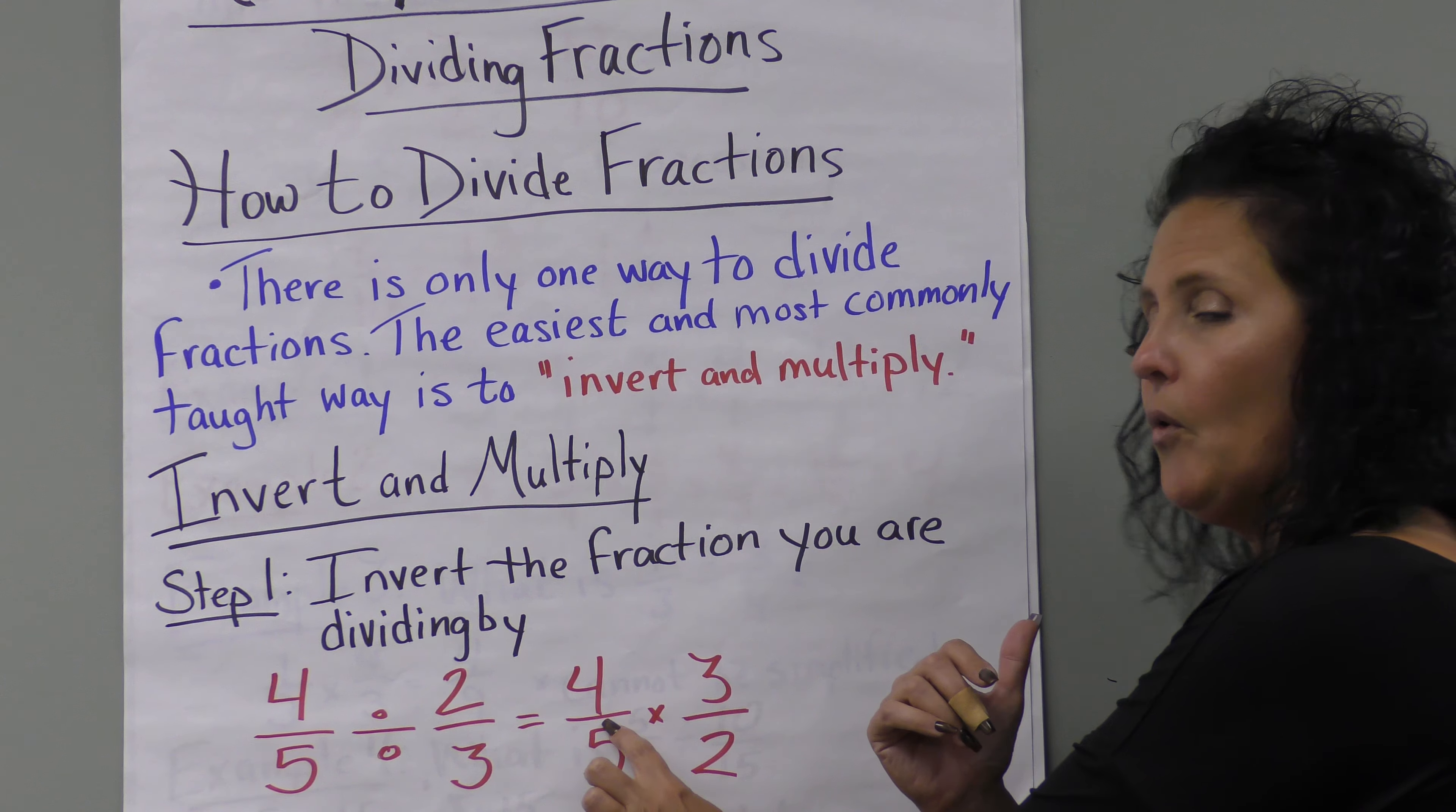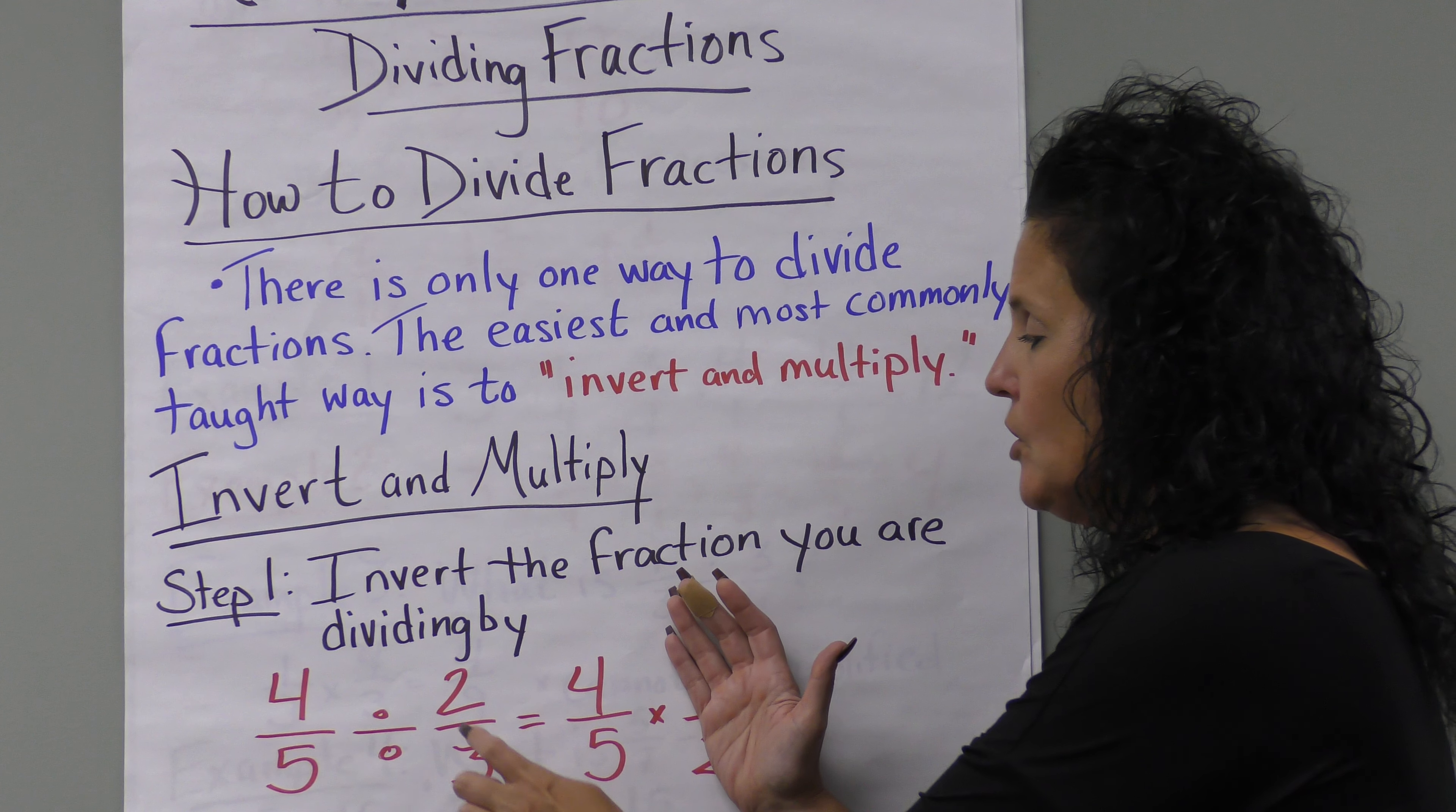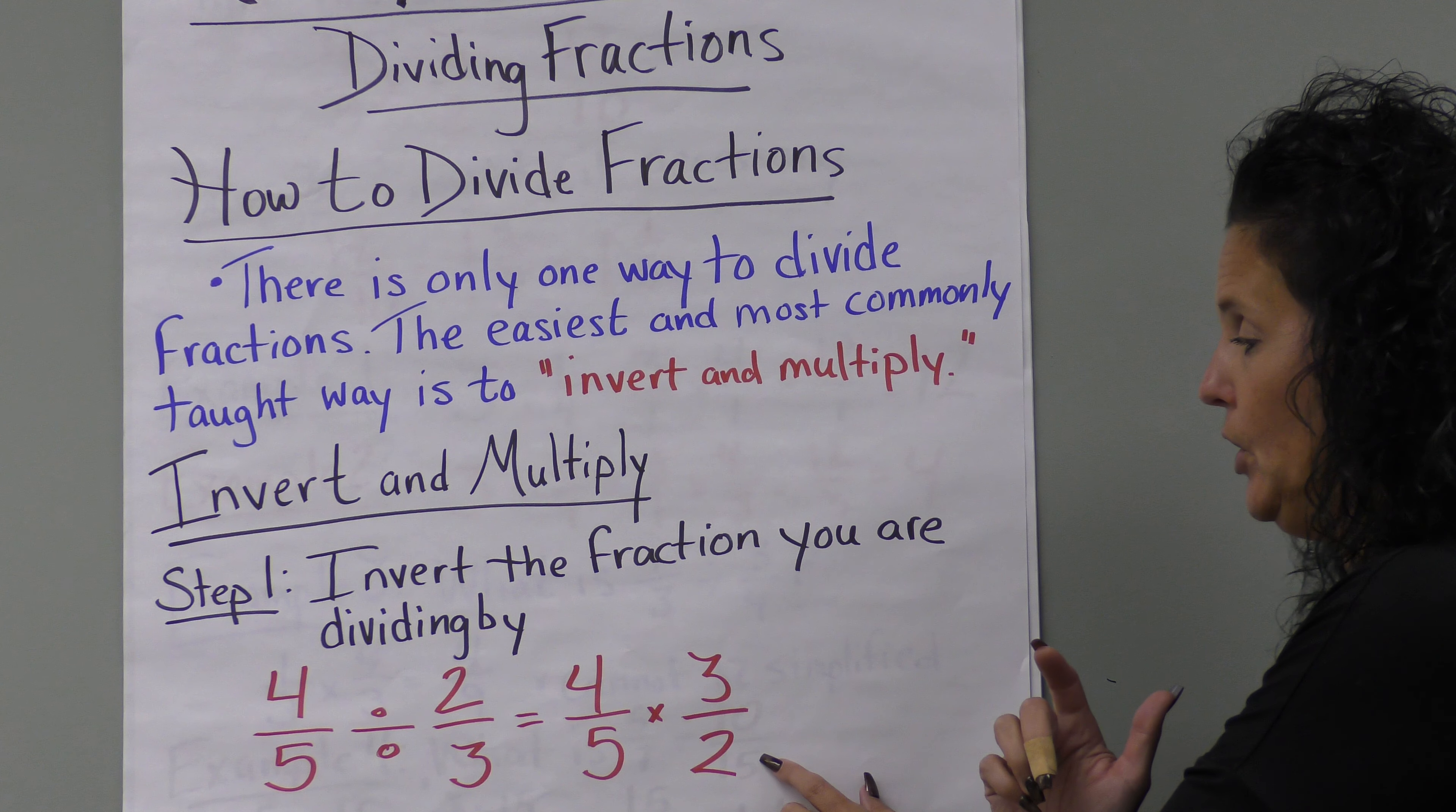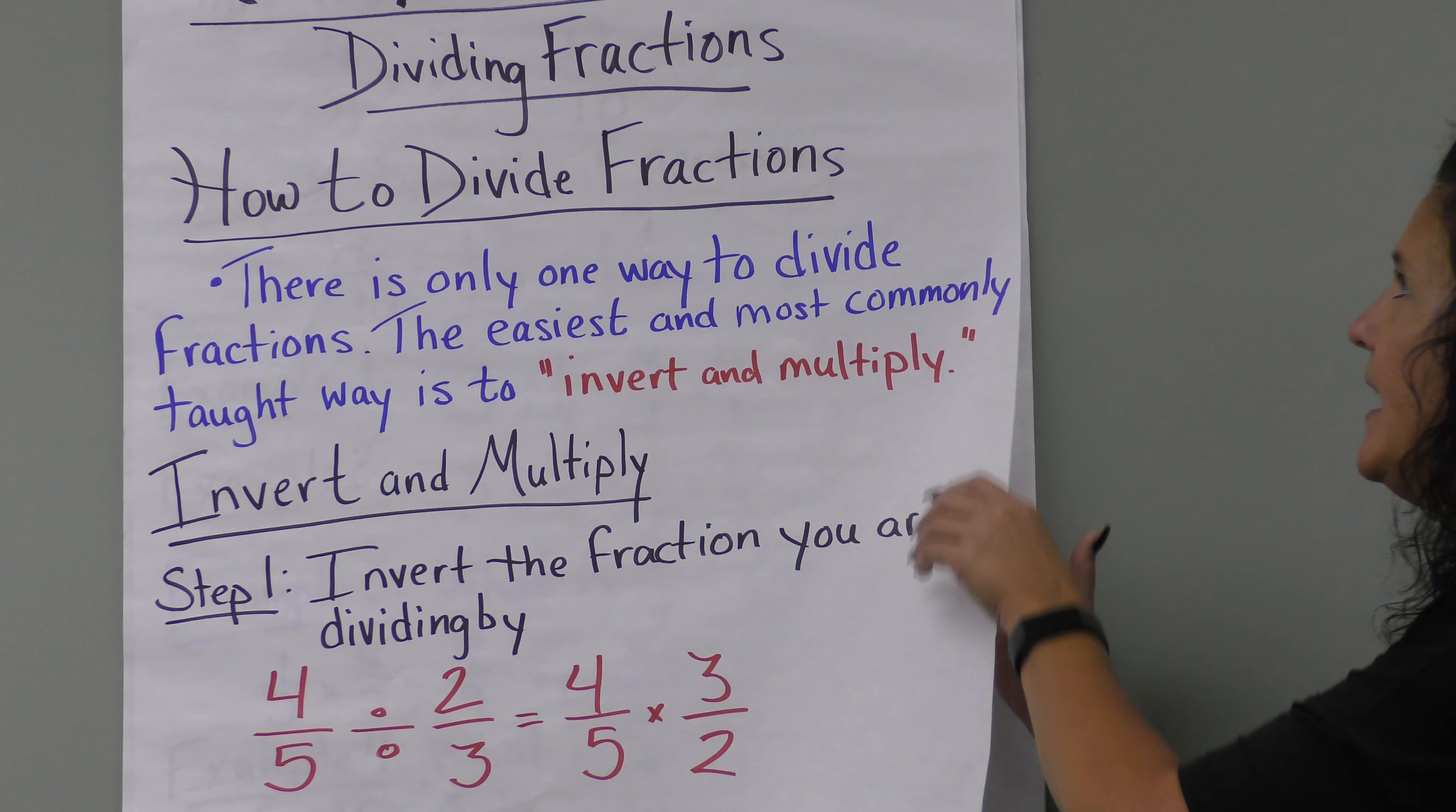So we keep four-fifths, but when we say invert, we mean flip it over. Instead of two-thirds, we change it to three-halves, or three over two, and then multiply. That's step one: invert the fraction we are dividing by.